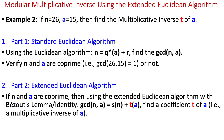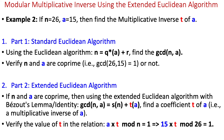In Part 2, if n and a are co-prime, we use the extended Euclidean algorithm with Bezout's lemma to calculate Bezout's coefficients s and t, where t is the multiplicative inverse of a. We can then verify the value of t in the relation a times t mod n equals 1.